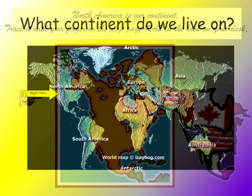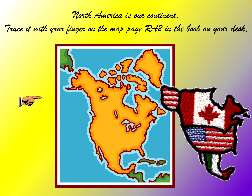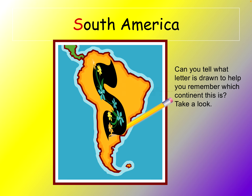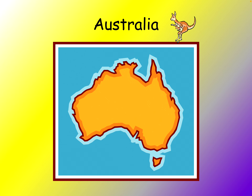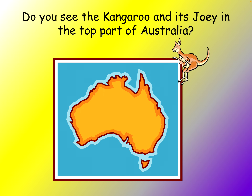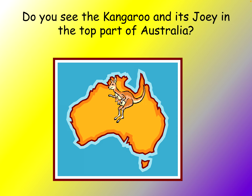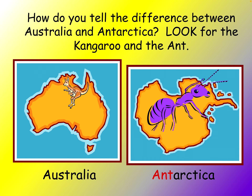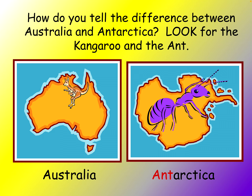You live in North America. If you're watching on your iPad, trace North America. South America looks like the letter S — that's a good way to remember it. Australia looks like a mama kangaroo with her joey in her pouch. Antarctica literally looks like an ant crawling across it, and a lot of young kids get Australia and Antarctica confused. The easiest way to remember Antarctica is to think of that peninsula as an antenna.